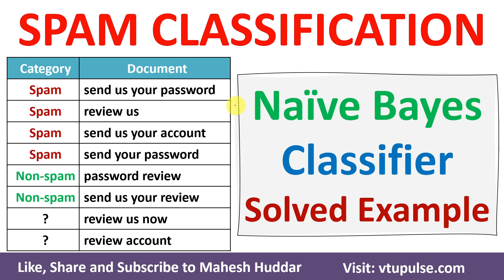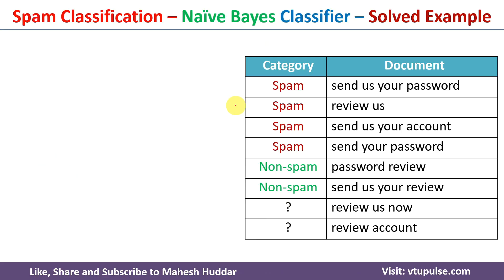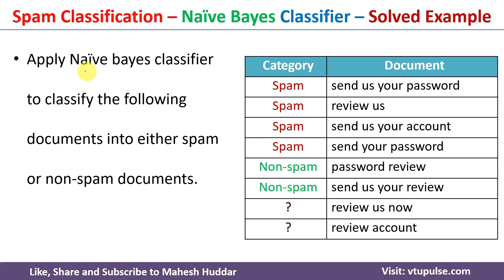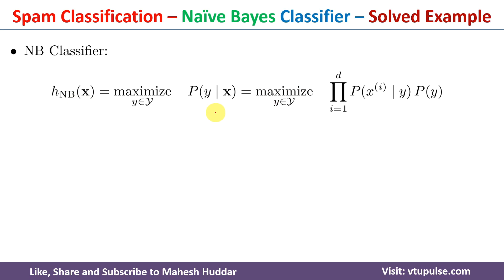Welcome back. In this video I will discuss how the Naive Bayes classifier is used for spam classification with the help of a simple solved example. We have been given six documents: the first four are spam documents and the remaining two are non-spam documents. Given this training data, we need to apply the Naive Bayes classifier and classify two new examples into either spam or non-spam.